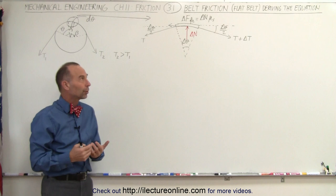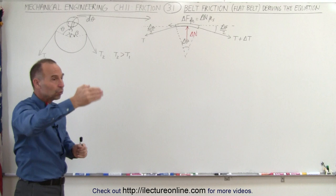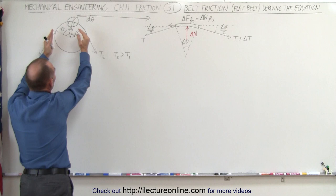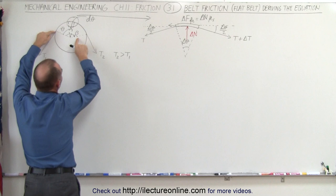Welcome to our lecture online. Our next topic in friction is called the belt. We're going to talk about belt friction, and in particular, a flat belt. We're going to derive the equation that determines the difference in the tension on the two ends of the belt when it's situated over a circular drum, peg, or round post around which the belt is wrapped. The angle between the two lines delineating where the belt touches the drum is called beta.